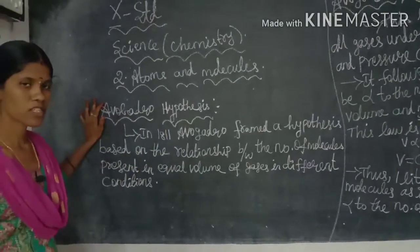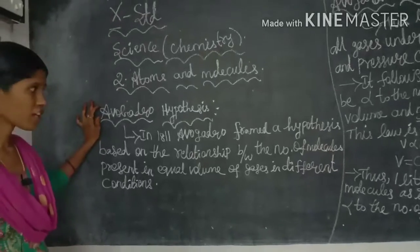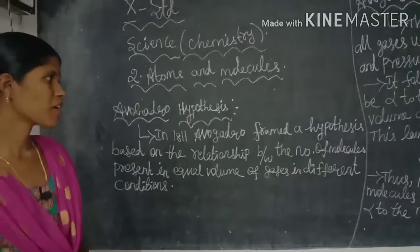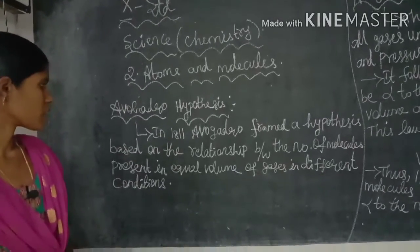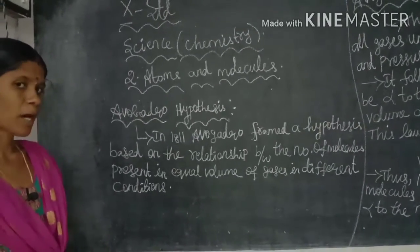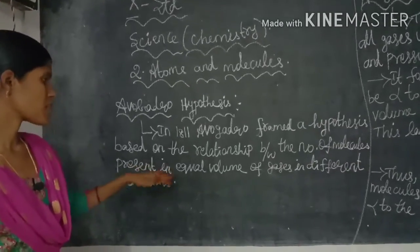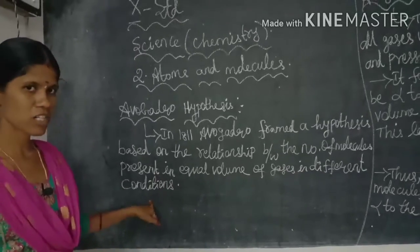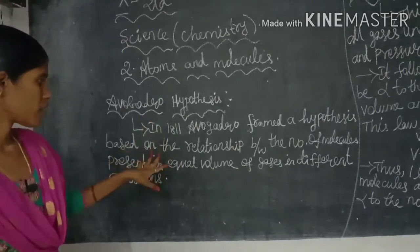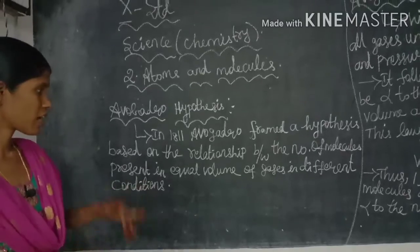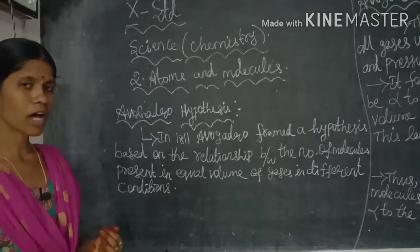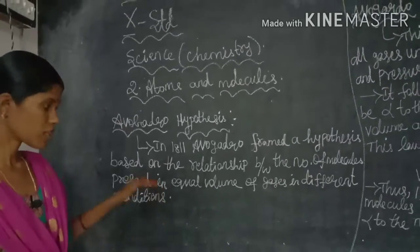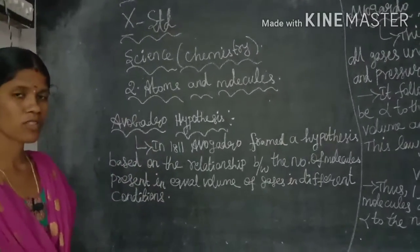Today we will see Avogadro's hypothesis and Avogadro's law. The Avogadro hypothesis: in 1811, Amedeo Avogadro framed a hypothesis based on the relationship between the number of molecules present in equal volumes of gases under different conditions. This concept is known as the Avogadro hypothesis.